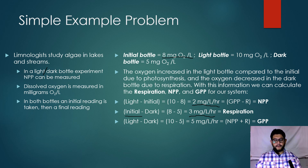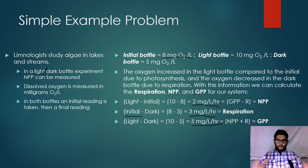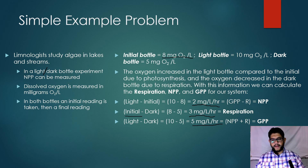So our gross productivity is the light bottle final value minus the dark bottle final value: 10 minus 5 equals 5 milligrams per liter per hour. You can verify this by adding NPP and R together — 2 plus 3 equals 5 — the same number. This is a straightforward problem that can be done in a lab with water, algae, and a probe measuring dissolved oxygen.